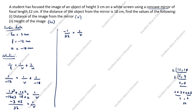So v is equal to minus 36 centimeter. We have calculated the answer to the first question: v is equal to minus 36 centimeter.